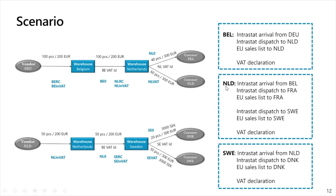As a result of these two flows, we expect to have Intrastat reporting, EU sales list reporting, and VAT declarations in three countries. Specifically for Netherlands: Intrastat arrival from Belgium, Intrastat dispatch to France (also reported in EU sales list), and Intrastat dispatch to Sweden (also reported in EU sales list). All these transactions are also reflected in the VAT declaration for Netherlands. For Sweden: Intrastat arrival from Netherlands, Intrastat dispatch to Denmark (also reported in EU sales list), and all these transactions reflected in the VAT declaration for Sweden. That was briefly about our scenario.